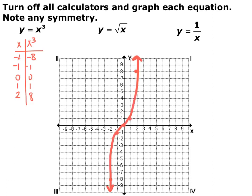For y equals x cubed, whatever your x-coordinate is, your y-coordinate is that value cubed. So you end up with points: negative 2 negative 8, negative 1 negative 1, 0 0, 1 1, and 2 8. You end up with a curve that looks like this. This does not have x-axis symmetry and does not have y-axis symmetry, but it does in fact have origin symmetry.